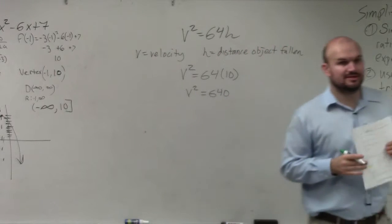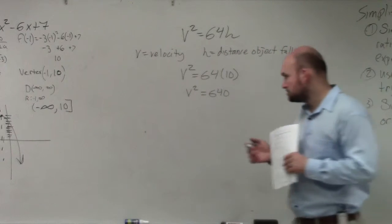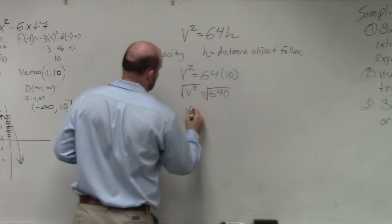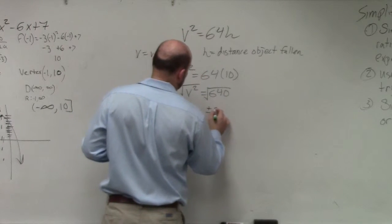How do I solve for 640? Square root. So v is equal plus or minus 80.